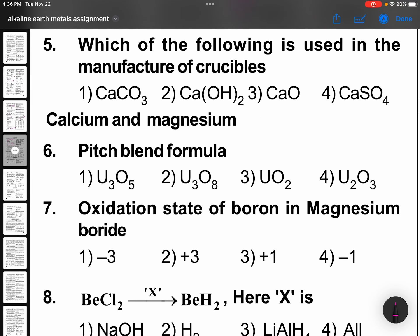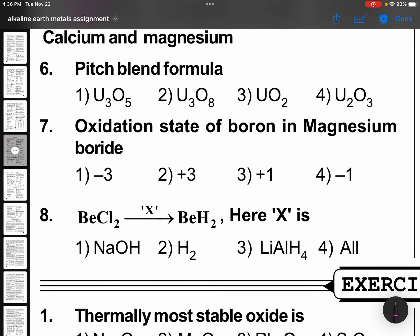Which of the following is used in the manufacture of crucibles? Again, memory based that is calcium carbonate. Pitch blende formula is U3O8. This is for radon purpose.